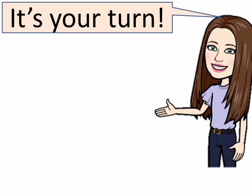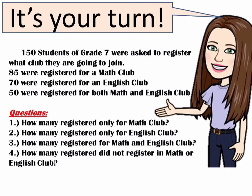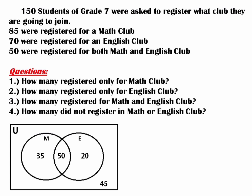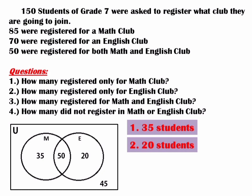Now it's your turn — you can pause the video to answer the activity. Let's check your work. This will be our Venn diagram. Question 1: How many registered only for math club? There are 35 students. Question 2: How many registered for English club? There are 20 students. Question 3: How many registered for math and English club? There are 50 students. Question 4: How many did not register in math or English club? There are 45 students.